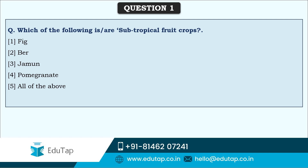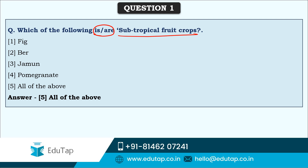The first question: which of the following is or are subtropical fruit crops? Based on climatic conditions, fruit crops can be put under three major heads: temperate crops, tropical crops, and subtropical crops. The answer is all of the above — fig, ber, jamun, and pomegranate are all subtropical crops.